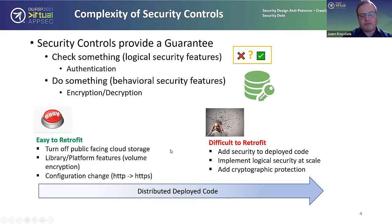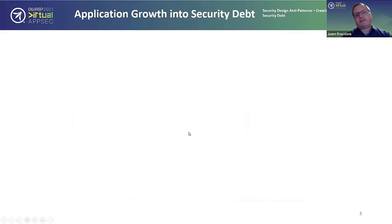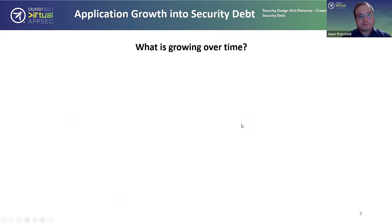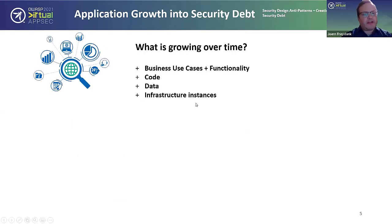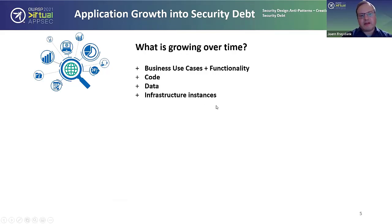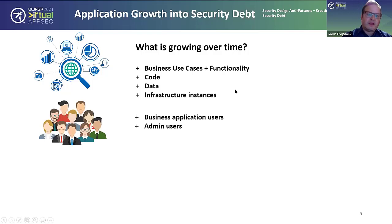Let's talk about how an application grows into security debt. What is actually growing over time? When an application grows, you're usually adding business use cases and functionality, then code and data are added, and with that we're adding infrastructure instances. This all comes from business requirements. With that, we're adding users — business application users and a different set of admin users added to the mix.